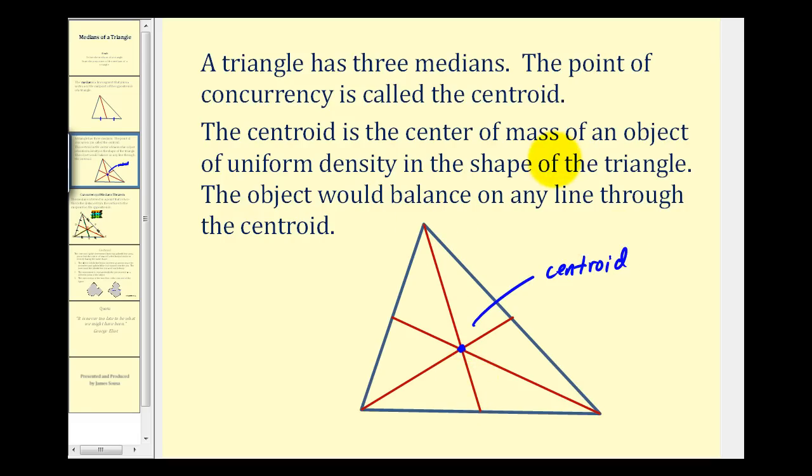The centroid is also the center of mass of an object of uniform density in the shape of a triangle, which means the object would balance on any line through the centroid. The way I like to think about this is, if this triangle was a piece of sheet metal with uniform density,